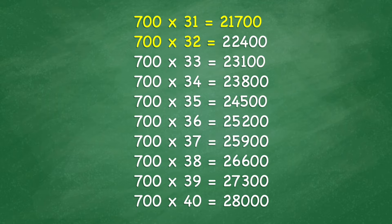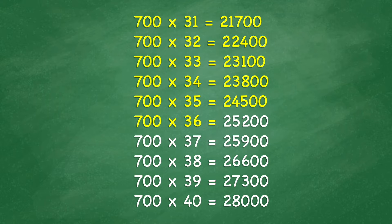700 times 32 equals 22,400. 700 times 33 equals 23,100. 700 times 34 equals 23,800. 700 times 35 equals 24,500. 700 times 36 equals 25,200. 700 times 37 equals 25,900. 700 times 38 equals 26,600. 700 times 39 equals 27,300.